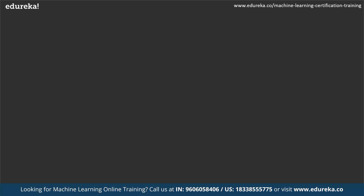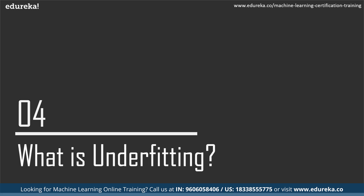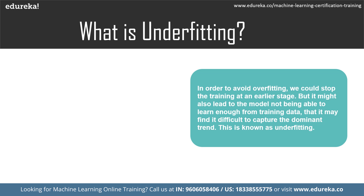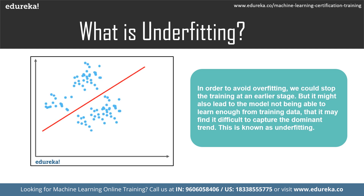Let us understand underfitting in machine learning. Overfitting is feeding a lot more data than necessary to the model. To avoid overfitting, we could stop training at an earlier stage — not feeding data to the model after a certain point — but this might also lead to the model not learning enough from the training data, making it difficult to capture the dominant trend. This is known as underfitting. The result is the same as overfitting — inefficiency in predicting outcomes — but the model takes less data than it needs to recognize the dominant trend.